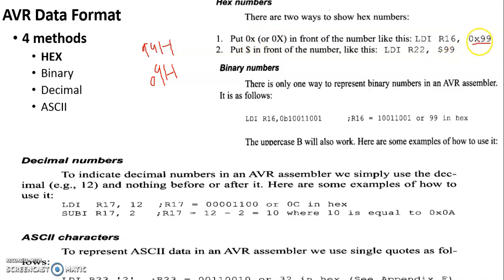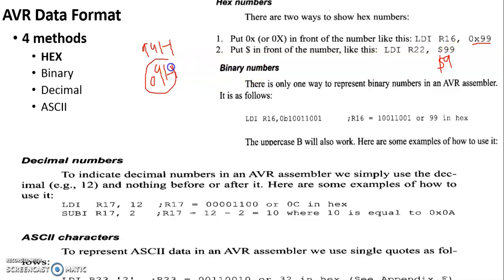A hexadecimal number can be represented as 0x99, for example. You can also put a dollar sign in front of the number, like $99 for hexadecimal. If you write $9 only, then this indicates the operand is 09 in hexadecimal. So this is how hexadecimal data can be represented in AVR.